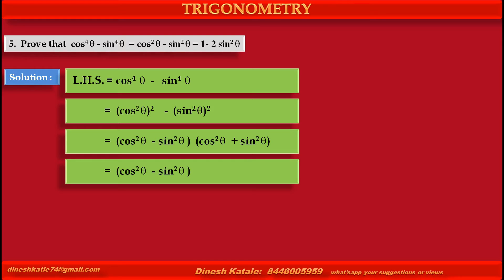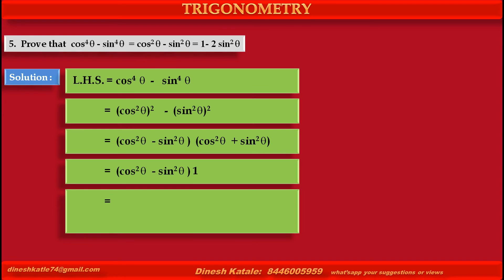This is equal to cos square theta minus sin square theta, as it is, multiplied by the value of cos square theta plus sin square theta. According to the trigonometrical identity, cos square theta plus sin square theta is equal to 1.